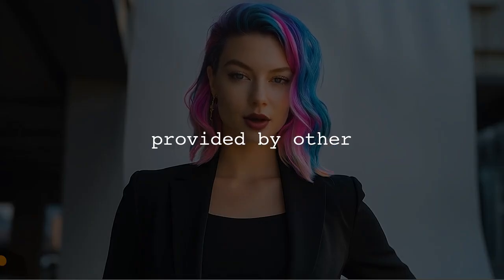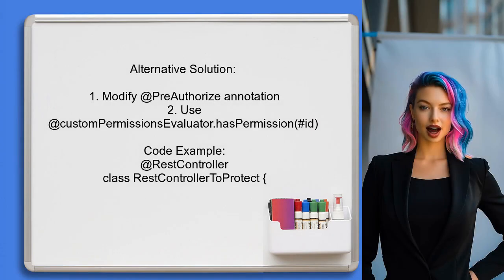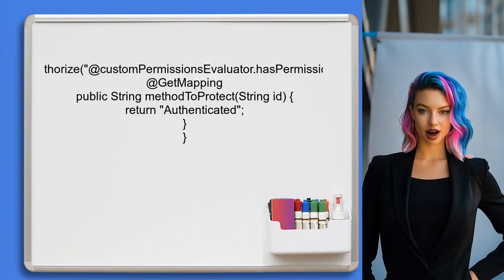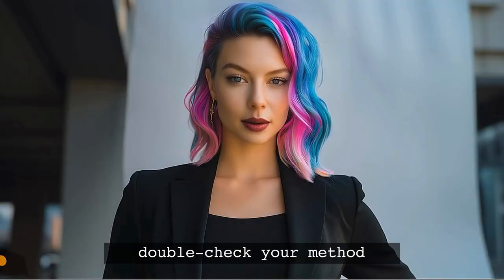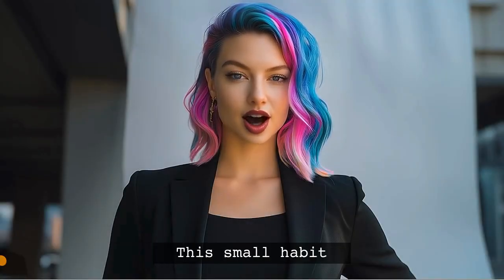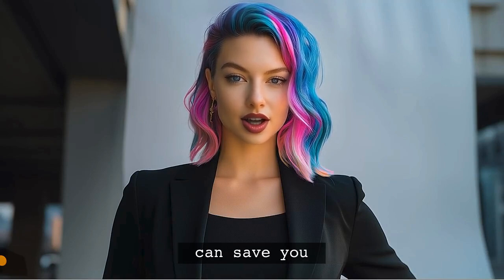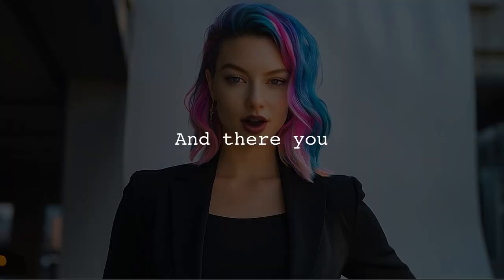An alternative solution provided by another user suggests modifying the @PreAuthorize annotation in your REST controller. Instead of calling hasPermission directly, they recommend using @CustomPermissionsEvaluator.hasPermission with the ID parameter. Here's the pro tip: always double-check your method signatures and ensure they align with what Spring Security expects. This small habit can save you hours of debugging.